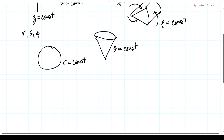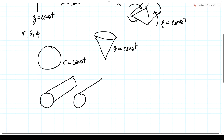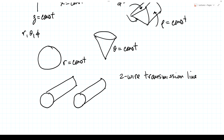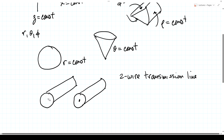But what about a very important practical problem where we have two parallel cylinders — this is the two-wire transmission line — and we want to solve for the fields supported on it? We could use cylindrical coordinates for one cylinder, but then the other cylinder would be very difficult to describe. This is where bipolar cylindrical coordinates come into play; the two poles are related to the two different cylinders.